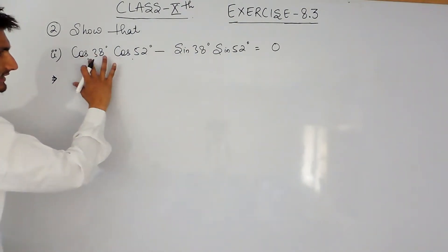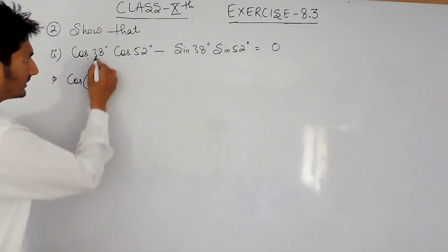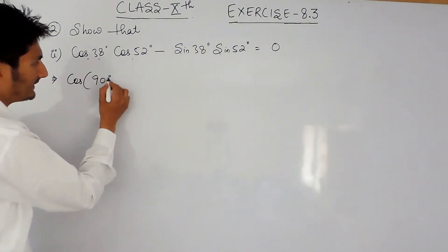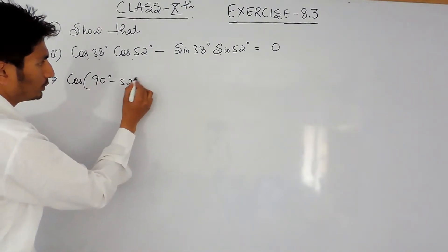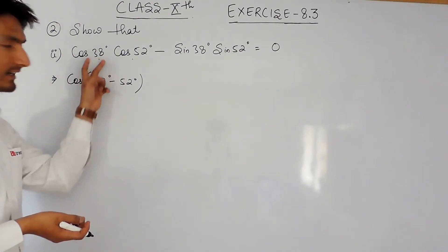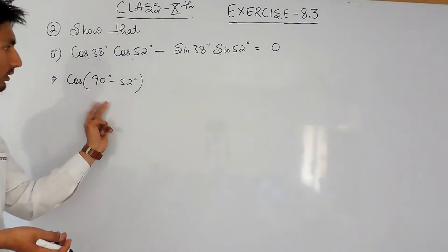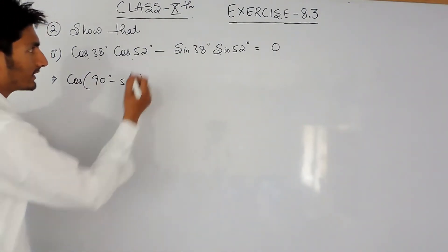So let's convert these two values. Now this is cos 38 degrees, and we know that the complement of 38 is 52 degrees. So 38 can be written as 90 minus 52 degrees, because 90 minus 52 is 38. So this expression will be cos 38, then we'll solve this further.